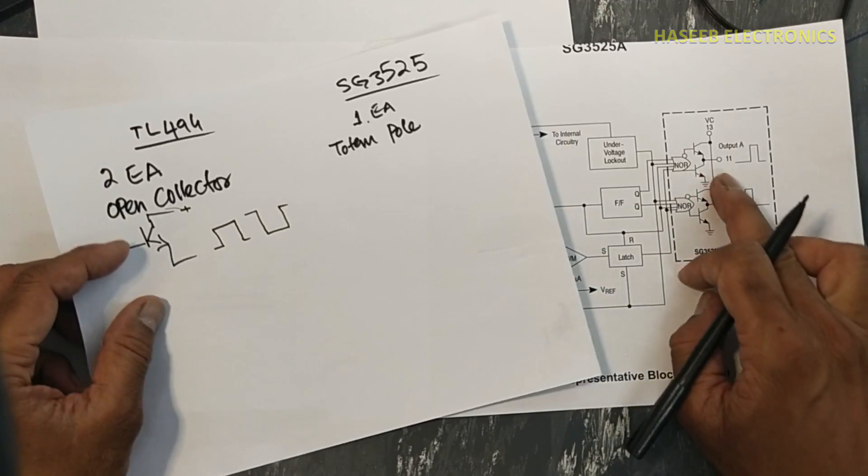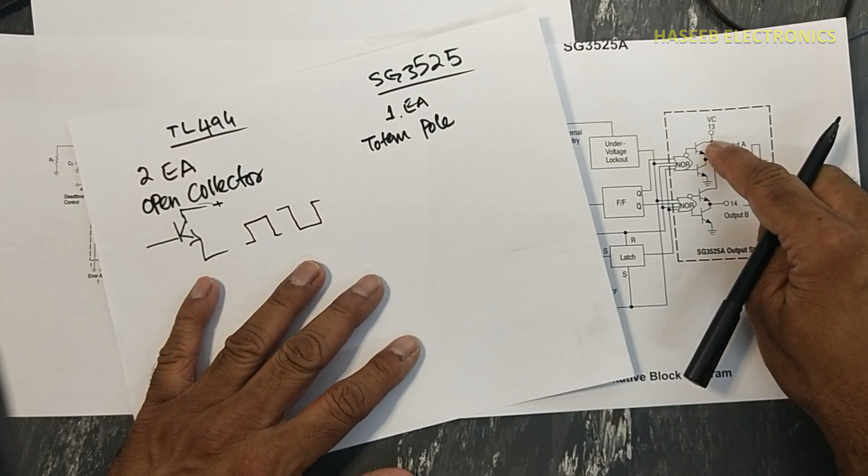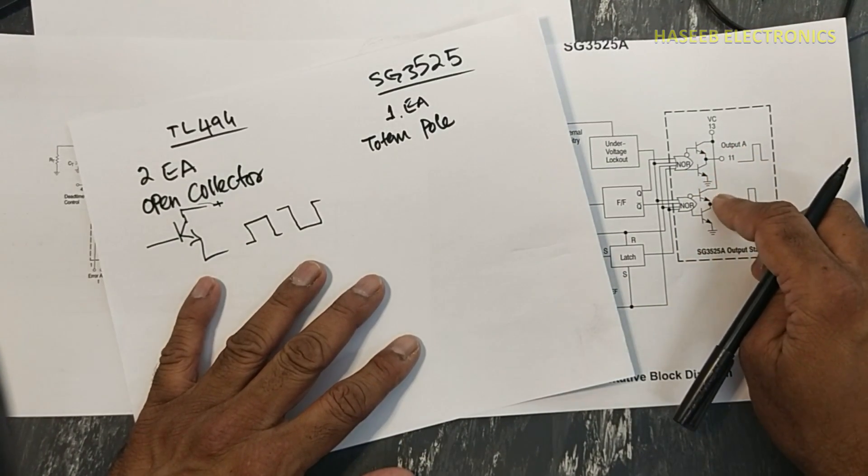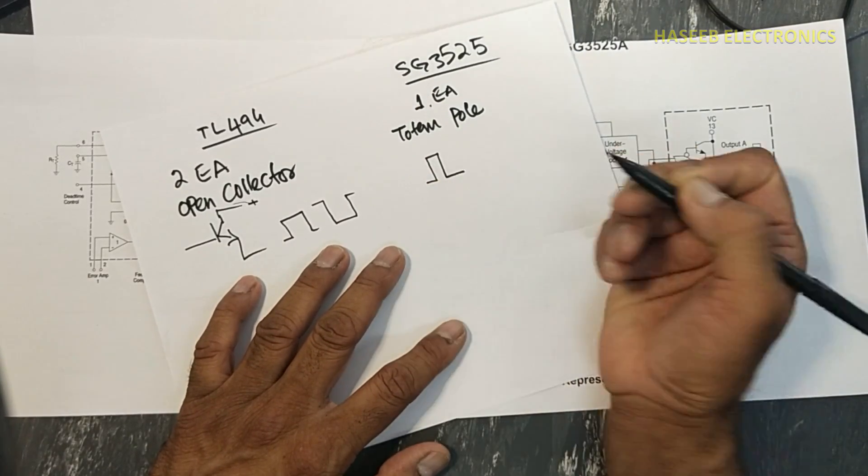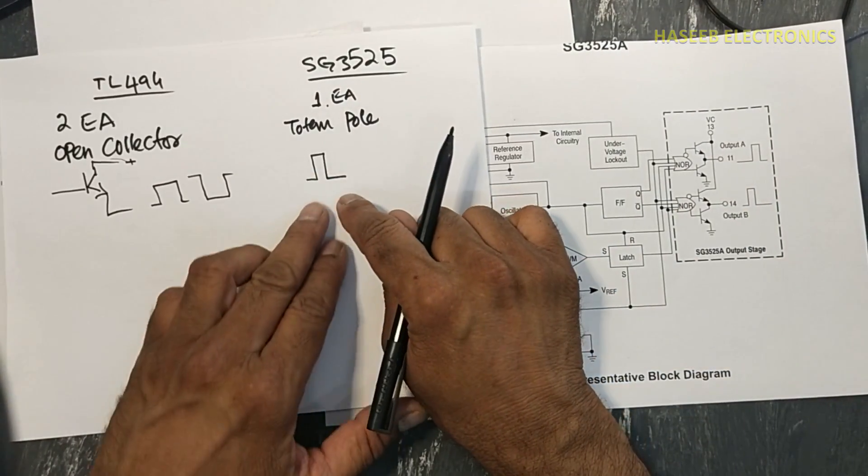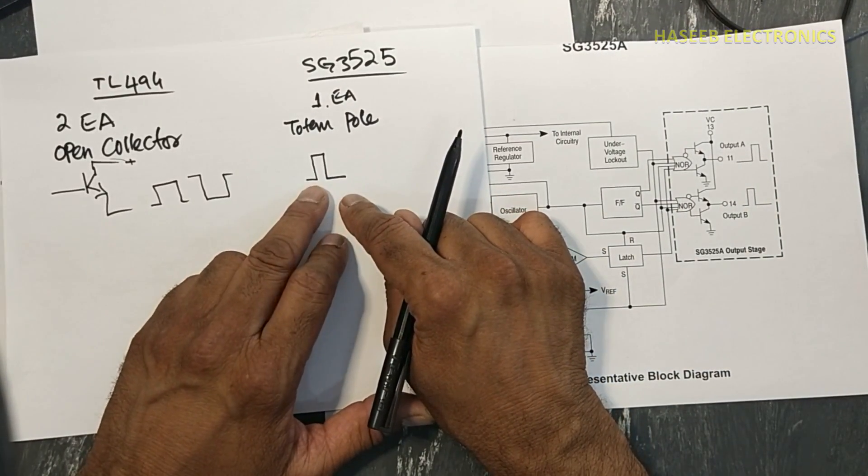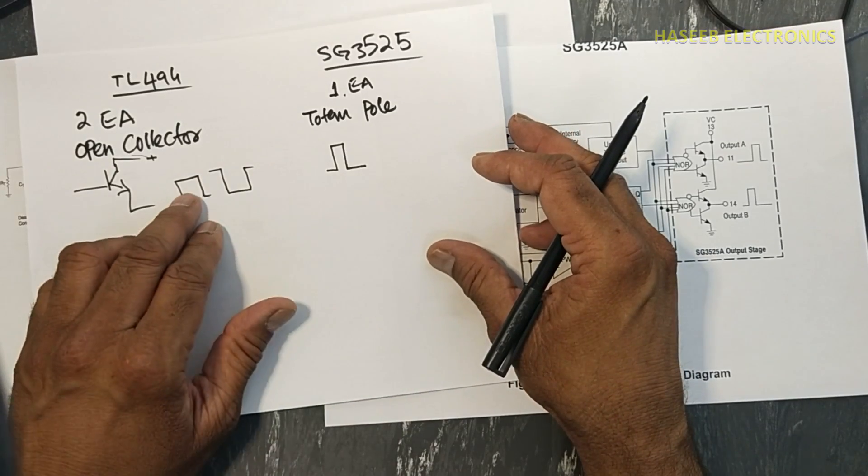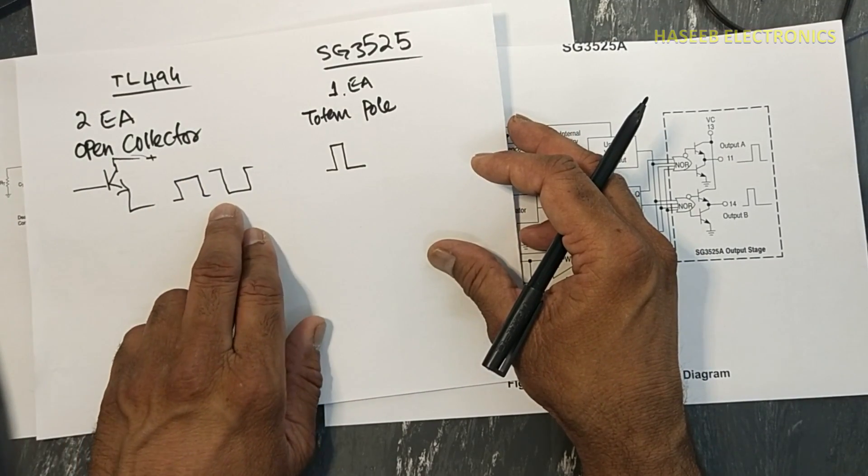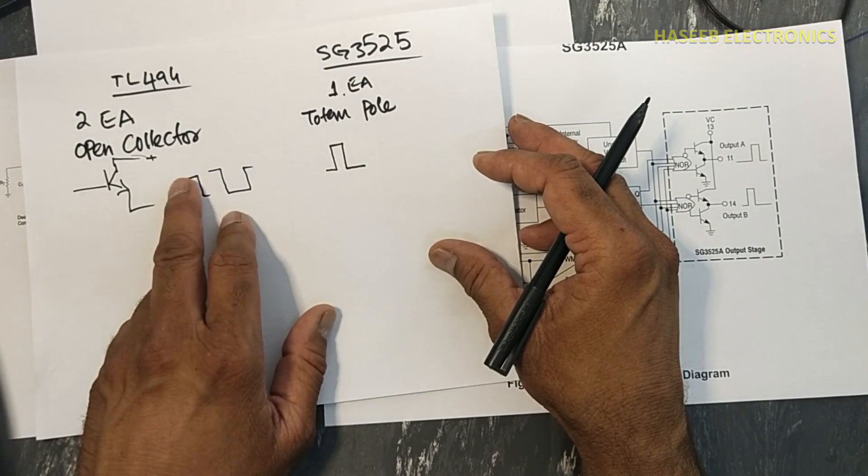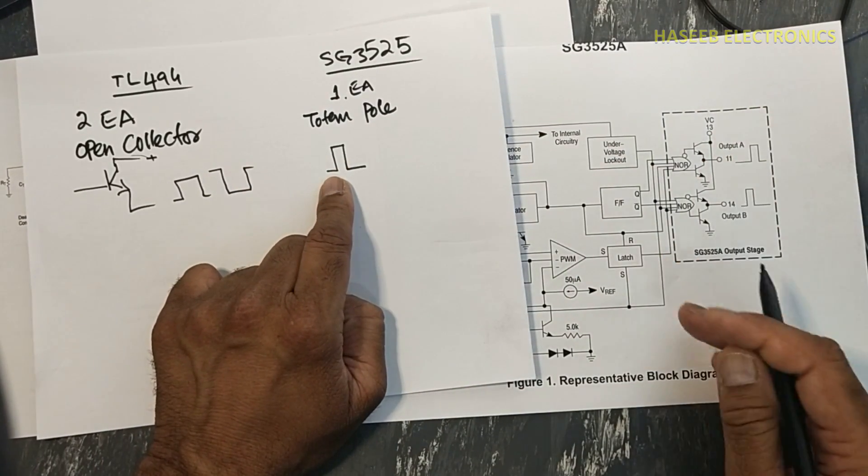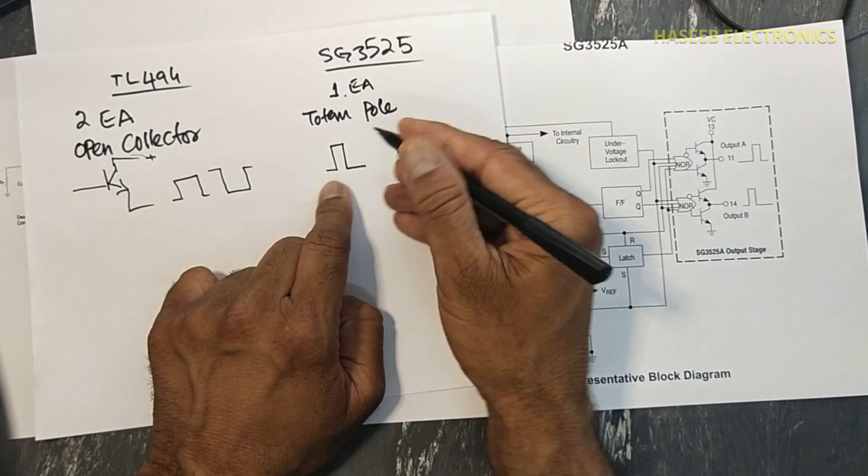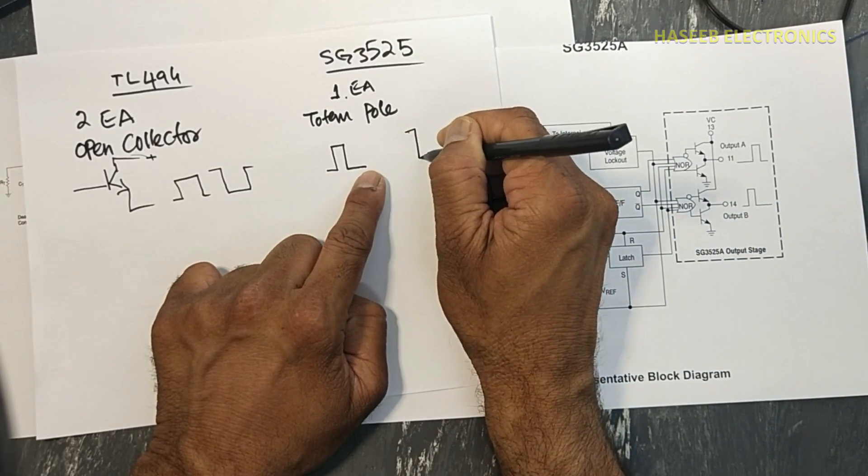We can use any type of output pulse, but in SG3525 it is using totem pole, that is configuration of two transistors. It will provide just only this pulse. When its internal flip-flop will turn on, it will provide this output. Here we are free, we can use any type of output pulse, either it is positive going or negative going. But here we will use this pulse if we are using SG3525. At that time, in case of 27, the pulse will in turn on time it will go to low.